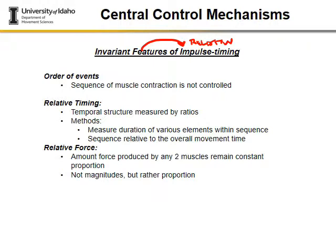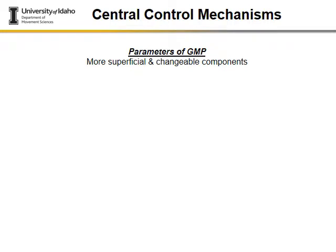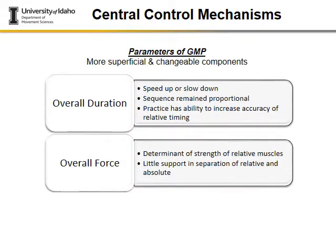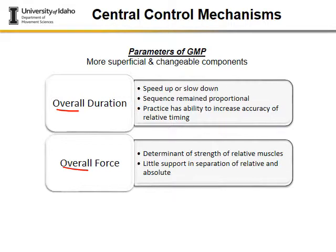Now for the non-fixed or changeable features — the parameters of the generalized motor program. We again have duration or timing and force, which together make up impulse. The difference is that the parameters refer to the overall, actual magnitude of time and force. The distinction between parameters and invariant features is that invariant features are relative, while parameters represent the overall absolute values. For duration, we consider whether we speed up or slow down; the sequencing remains proportional, but increases in accuracy and relative timing can improve with practice.